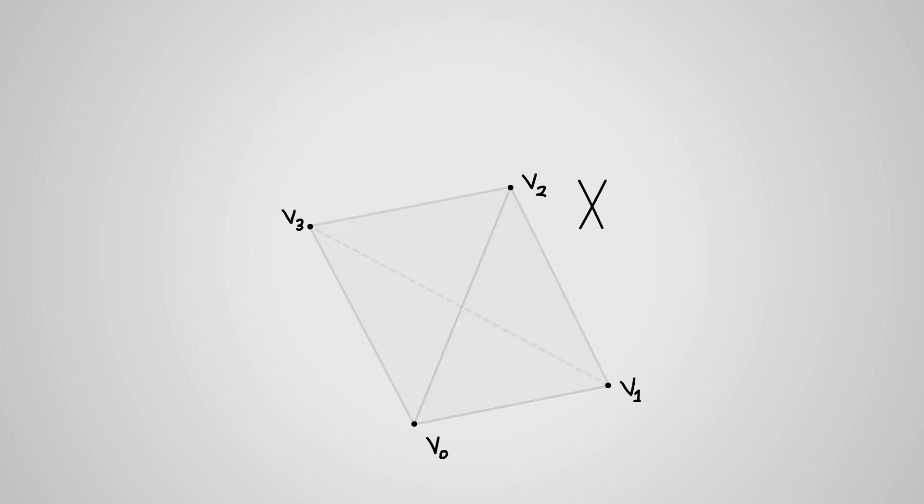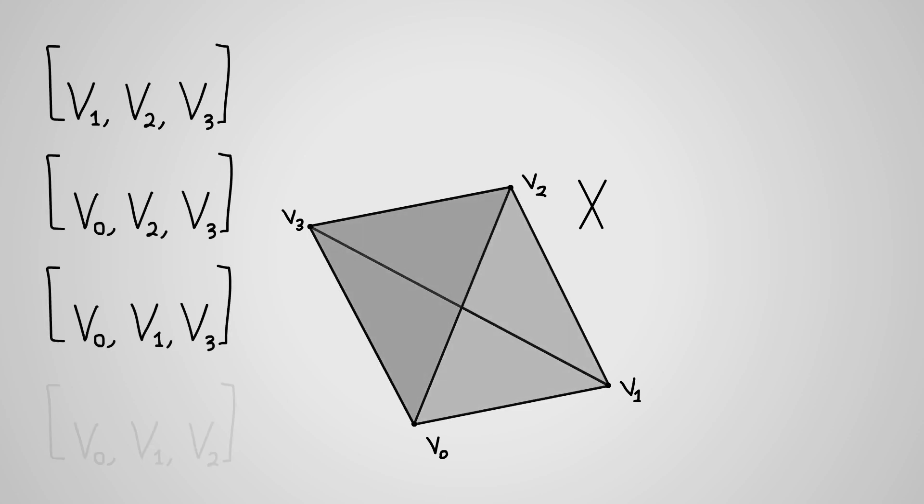If we omit just one of the vertices of x, and take the convex hull of the n remaining, then we get simplices of dimension 1 less than that of x, which we call the faces of x.